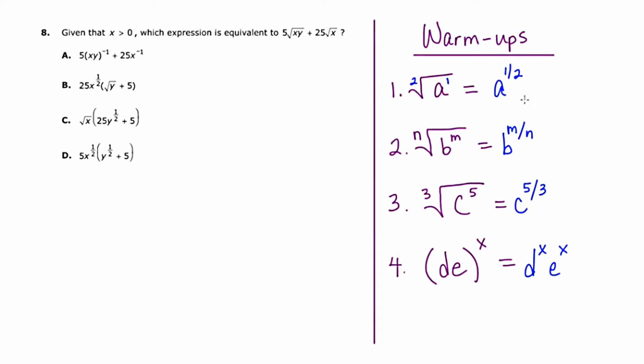So keeping all these skills in mind, let's take a look at the actual problem. So we start with five root xy plus 25 root x. The first thing that I'm going to do is transition this expression into fractional exponents. So I'm going to say five, and then we've got xy as a chunk, but it's being square rooted. And because it's being square rooted, I know that it's going to be raised to the one half power.